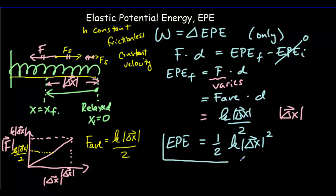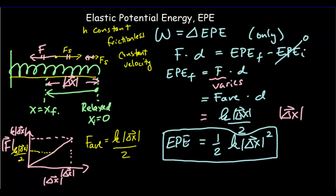Notice that the formula for elastic potential energy — one-half k x² — is very similar to the formula for kinetic energy — one-half m v². Both have a factor of one-half out front, both then have a constant (mass or spring constant), and both have a magnitude squared (speed is the magnitude of velocity, x is the magnitude of displacement). The two forms are very similar.